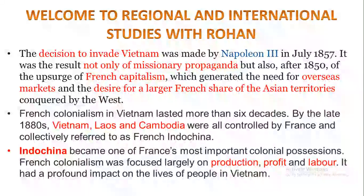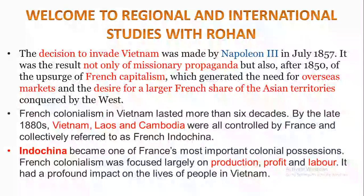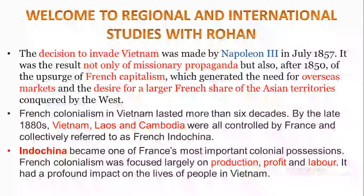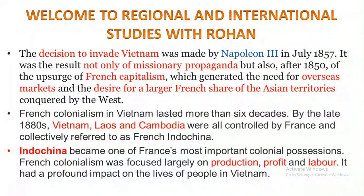The overseas markets could be the Asian market or African market. They wanted more supremacy and hold over the Asian and African continents, and desired a larger French share of the Asian territories conquered by the West. French colonialism in Vietnam lasted more than six decades. By the late 1880s, Vietnam, Laos, and Cambodia were all controlled by France and collectively referred to as French Indochina, which became one of France's most important colonial possessions.